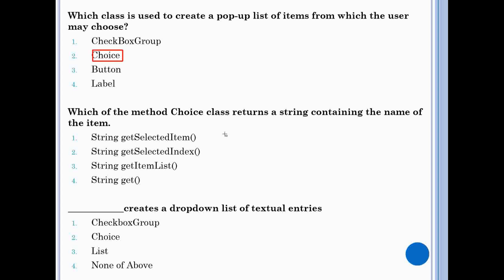Which of the method choice class returns a string containing the name of the item. So answer is string getSelectedItem.